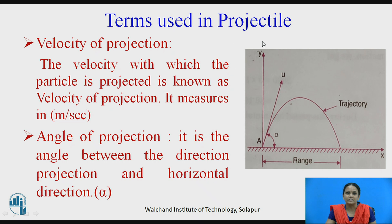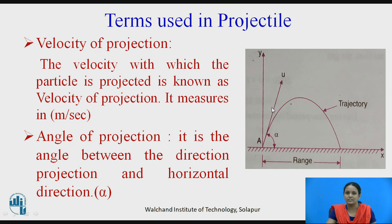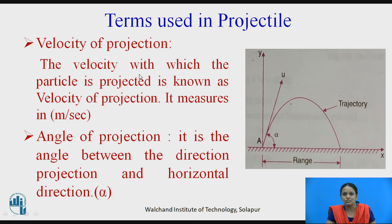These are the common terms used in projectile motion. As shown in this figure, particle U is thrown upward from the ground, inclined to the surface, so it has two directions: horizontal and vertical. Velocity of projection: the velocity with which the particle is projected is known as the velocity of projection, measured in meters per second.